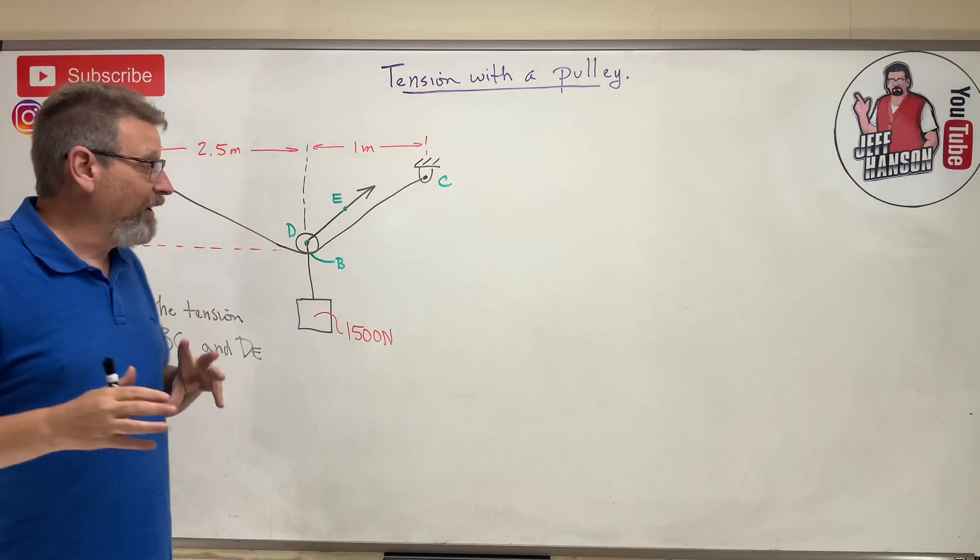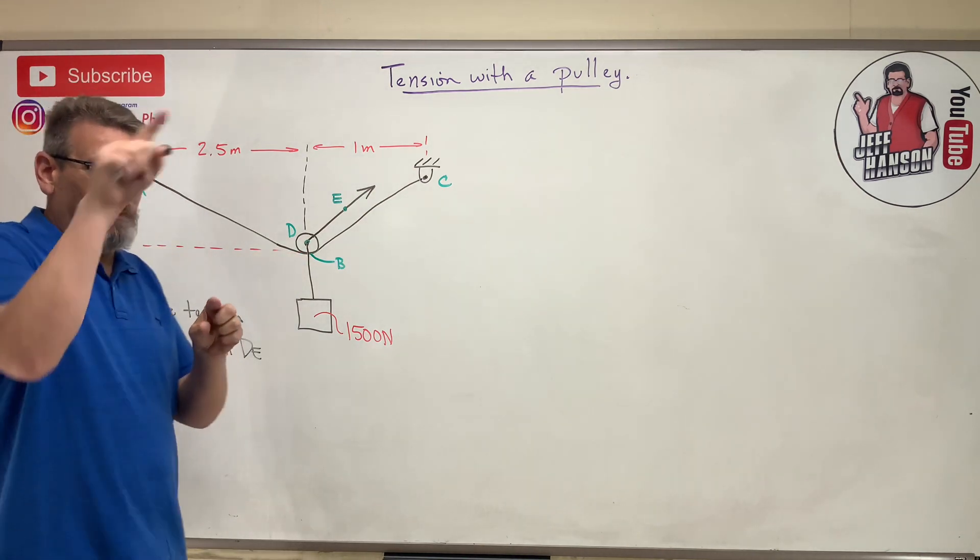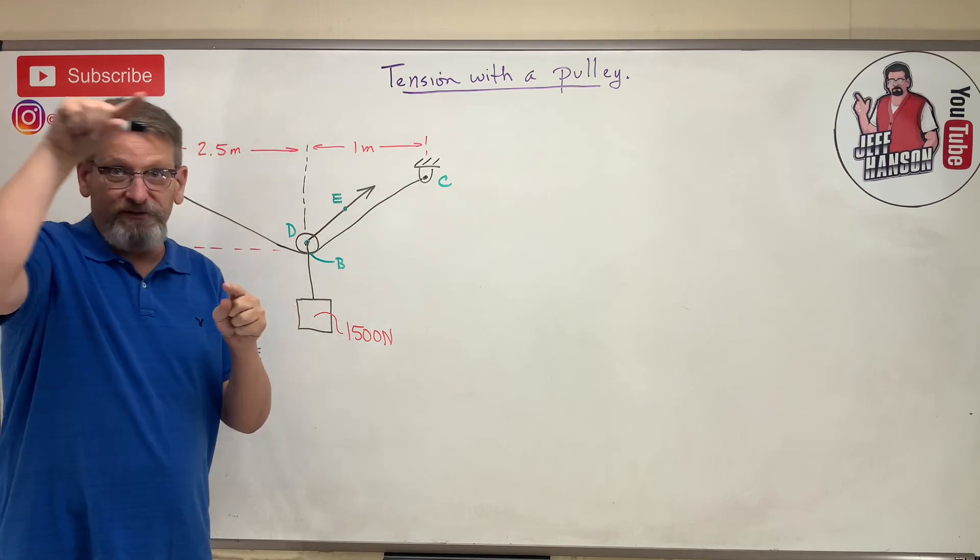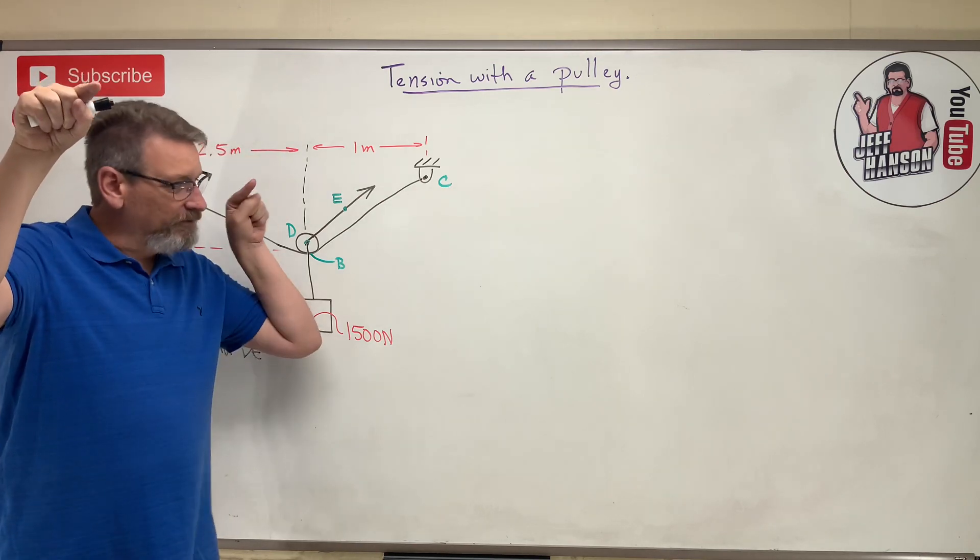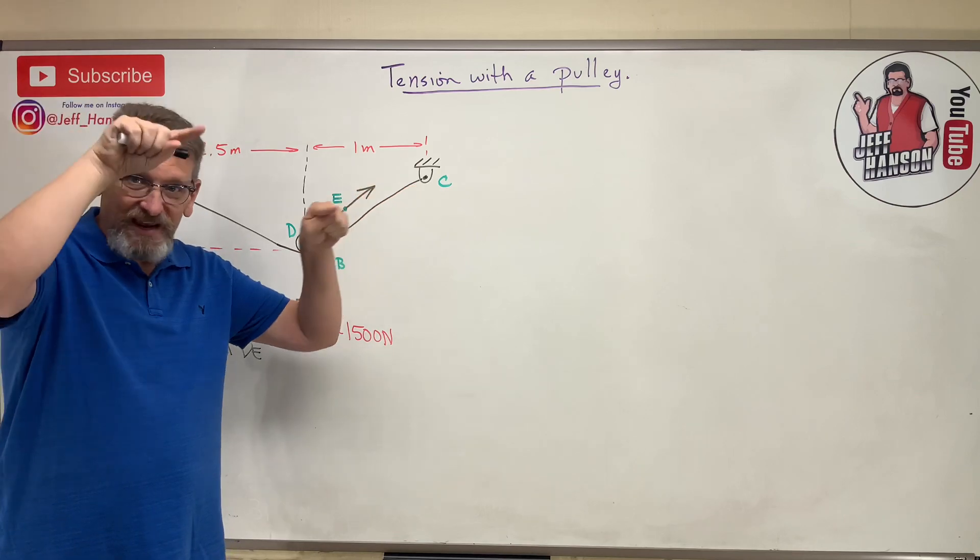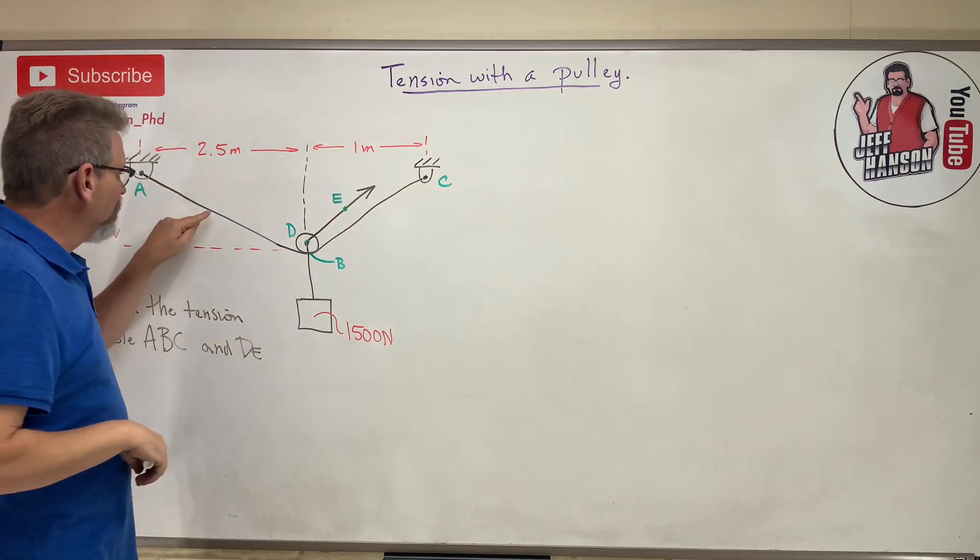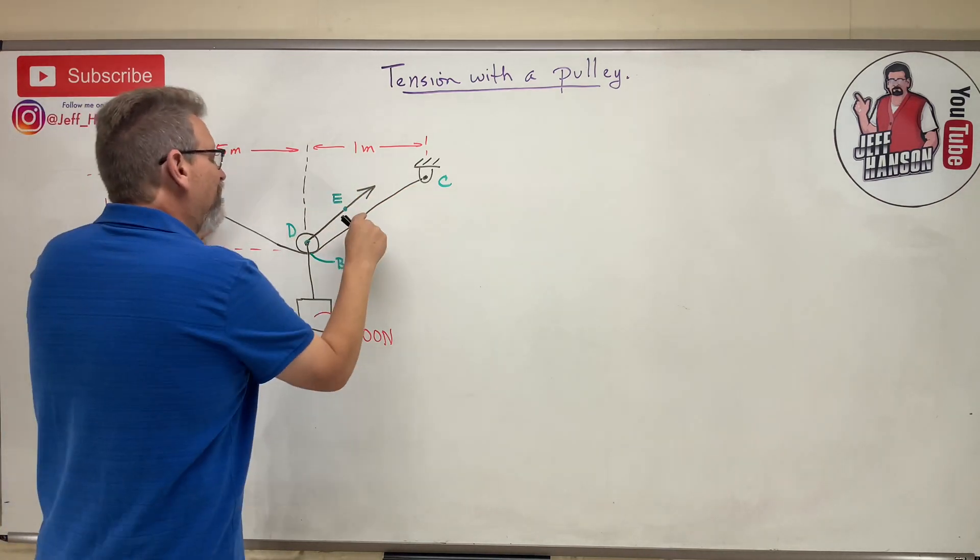Otherwise it's like the belt in your car, right? The belt in your car goes around a bunch of pulleys and things. The tension in the belt over here is not different than the tension in the belt over there - it's the same everywhere. So if this is T, then that's T.